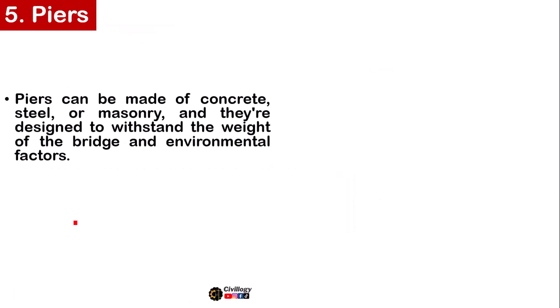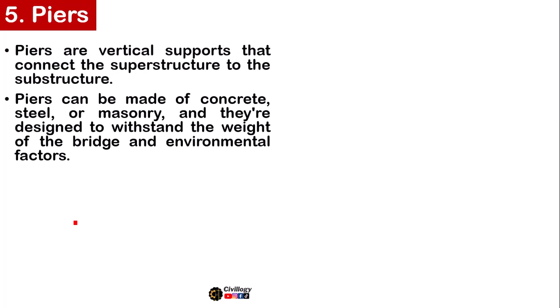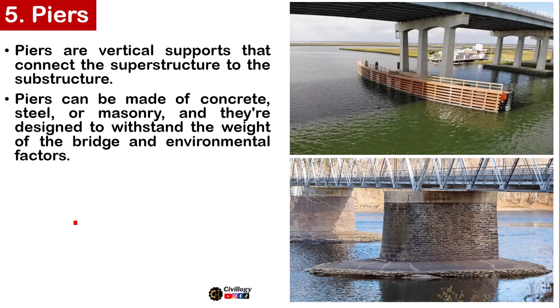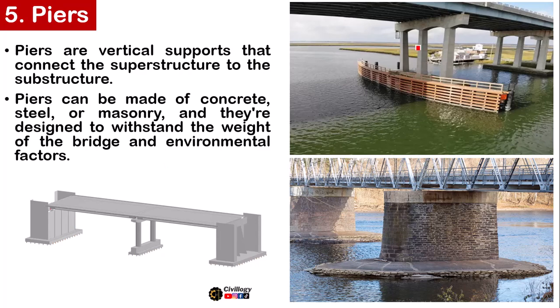Fifth, we have Piers. Piers can be made of concrete, steel, or masonry and are designed to withstand the weight of the bridge and environmental factors. Piers are basically vertical supports that connect the superstructure to the substructure. These vertical members support the deck and the superstructure, and can be made of different materials like concrete, masonry, steel, or wood.